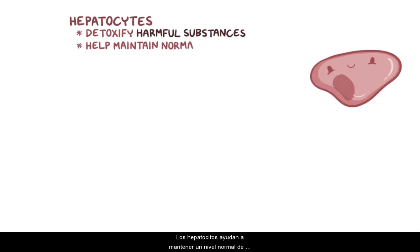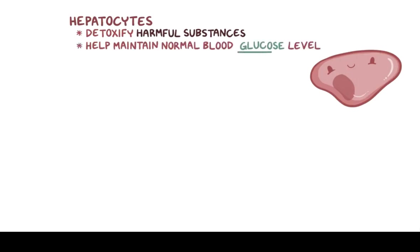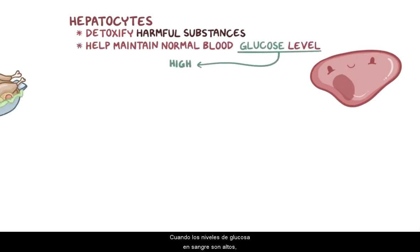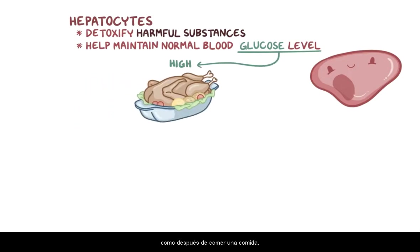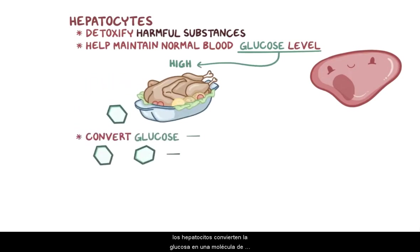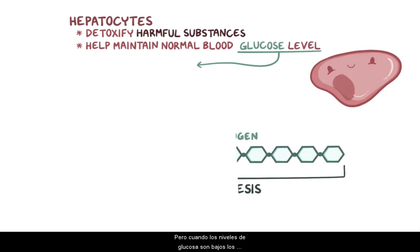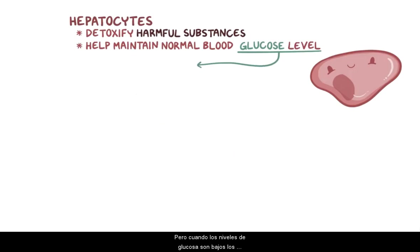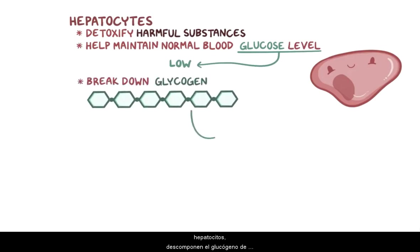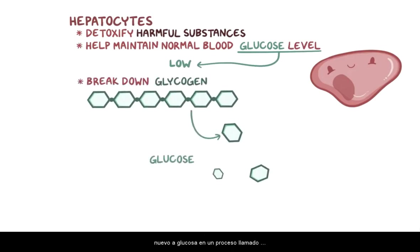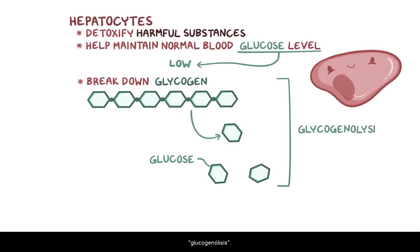Hepatocytes help maintain a normal blood glucose level. When blood glucose levels are high, like after eating a meal, hepatocytes convert glucose into a storage molecule called glycogen using a process called glycogenesis. But when glucose levels are low, the hepatocytes break down the glycogen back into glucose in a process called glycogenolysis.